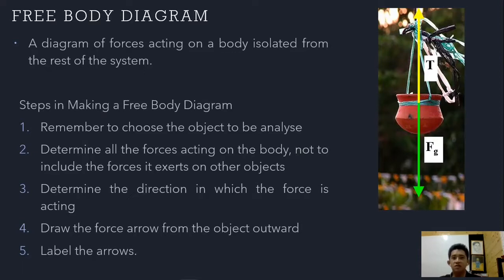We will deal with stability and equilibrium in the next discussions. Draw force arrows from the object outward. The tension moves up from where the string is tied, and the force due to gravity is always drawn from the center of gravity — so we draw gravity at the middle of the palayok and the tension pointing upward. Then we label them.